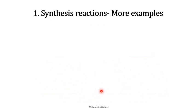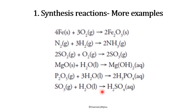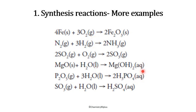Here are more examples — you will find the pattern of forming one single product from reactants. Iron combines with oxygen to form iron oxide. We represent the state of matter in parentheses: S means solid, G means gas, L means liquid, and AQ means aqueous — a solution prepared in water. All these produce a single product.